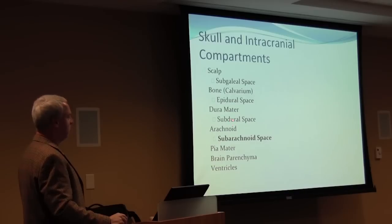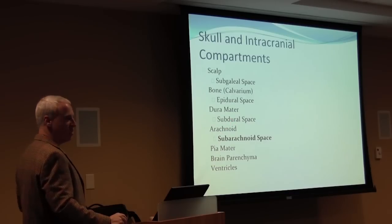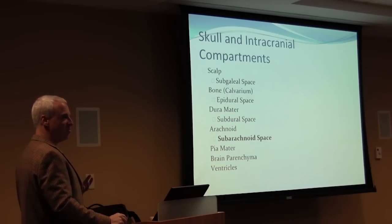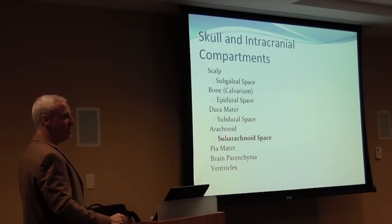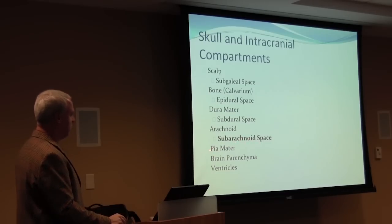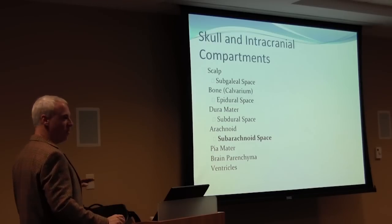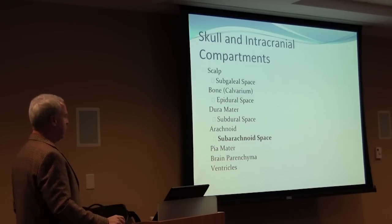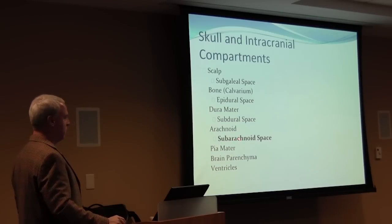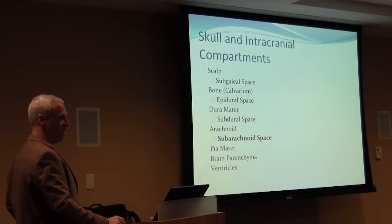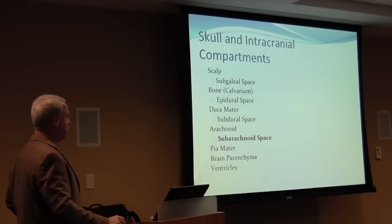Beneath the dura mater is the subdural space. Beneath that is the arachnoid, which is the thin, lacy covering of the brain. Underneath the arachnoid, between the arachnoid and the brain tissue itself, is the subarachnoid space. Beneath the subarachnoid space is the pia mater, which is the actual covering of the brain itself that cannot be peeled off without damaging it. The arachnoid is a membrane that surrounds the brain, can be opened up, and contains fluid.